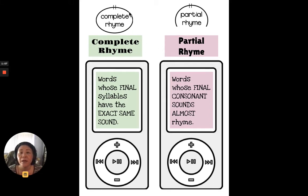Complete rhyme, we would indicate it by circling it, writing a complete circle around the words and putting these two dots, two lines over it. And complete rhymes are words whose final syllables have the exact same sound, exact same sound. It's exactly the same when you would listen to it.